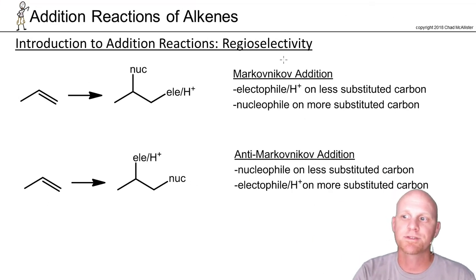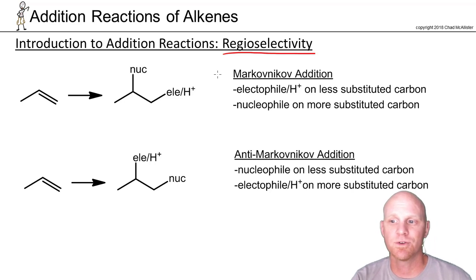To speak of addition reactions here, one of the first things we've got to talk about is what's called regioselectivity. So if you add two different things across the alkene, those two new sigma bonds, the term is which carbon gets what matters, and how we determine that's what's called regioselectivity.